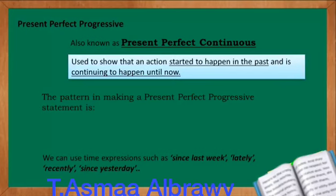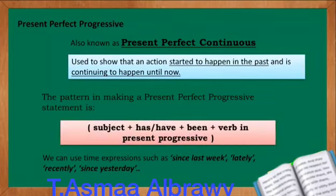The pattern in making a present perfect progressive statement is: subject, plus has or have, plus been, plus the verb in present progressive. We can use time expressions such as since last week, lately, recently, since yesterday, and so on.